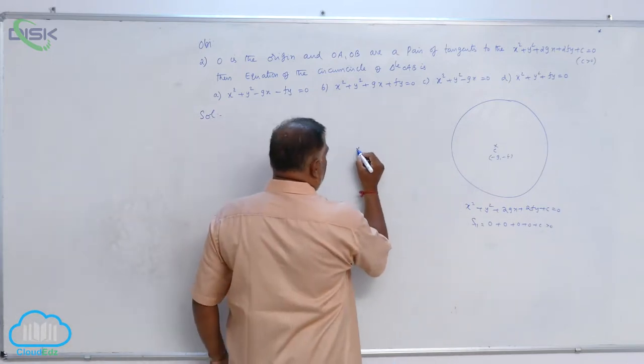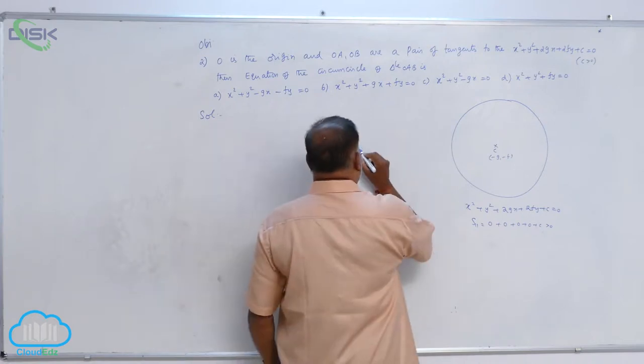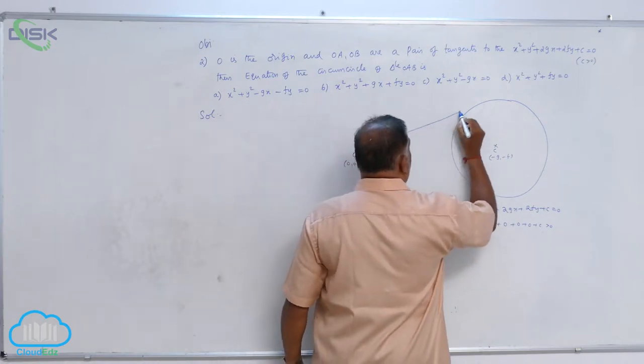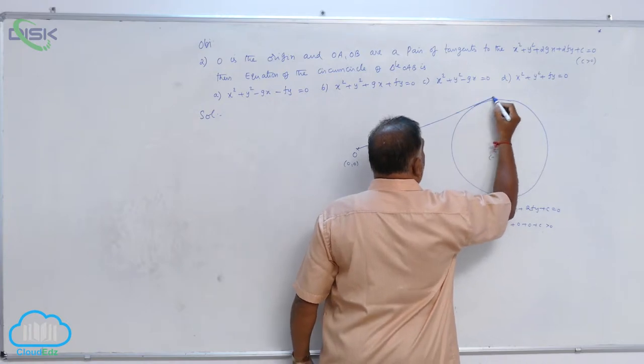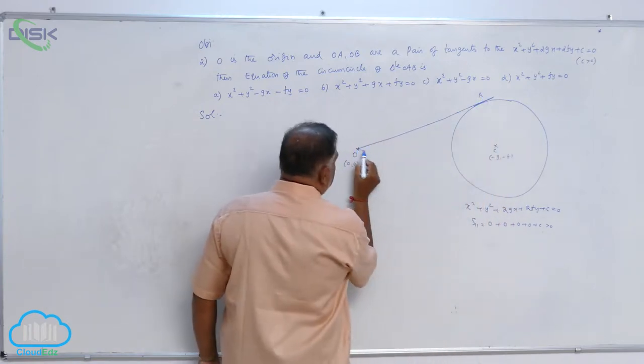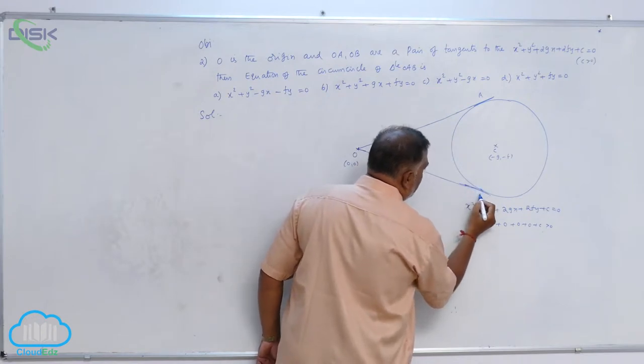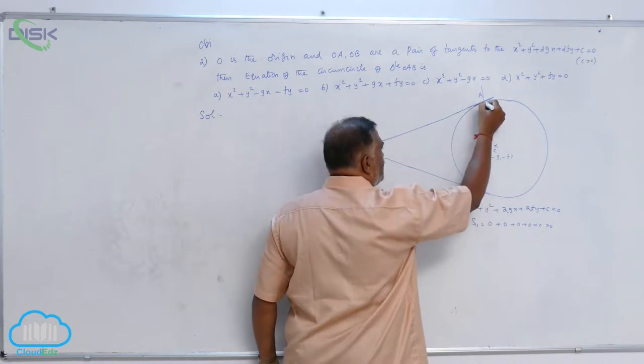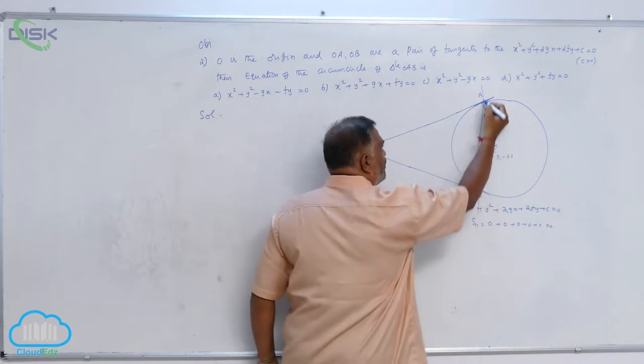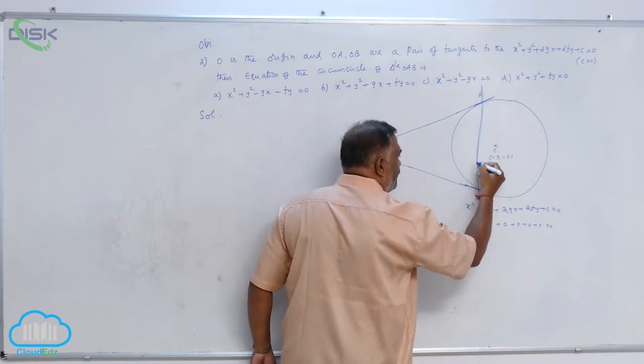Let us consider O is here 0, 0. You draw the tangents like this. This is A and this is B like this point. Now, if you join these two, definitely this will become chord of contact.